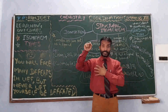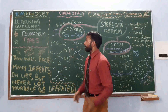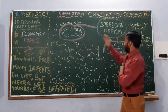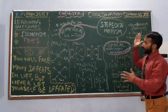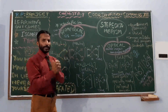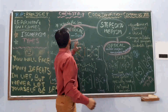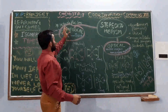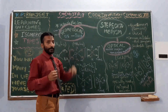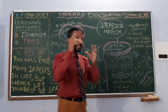Now let us study stereoisomerism. As I have told you, stereoisomerism is of two types: geometrical and optical. In geometrical isomerism, there are two types of isomers known as cis and trans. This type of isomerism is present in heteroleptic complexes — meaning complexes having more than one type of ligand.